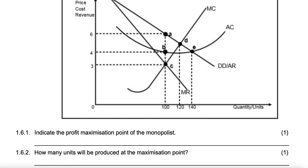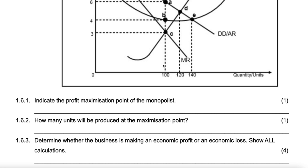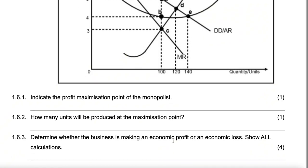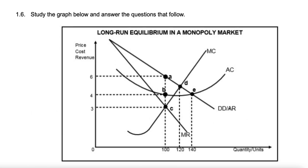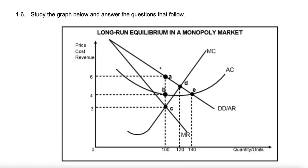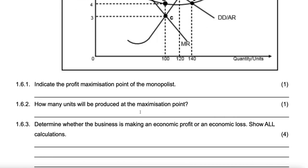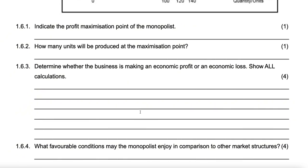Number three: determine whether the business is making an economic profit or an economic loss — show calculations. We said AR minus AC: 6 minus 4 equals 2. Then 2 times 100 equals 200. Therefore, the firm is making an economic profit.